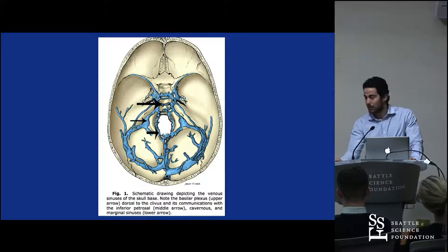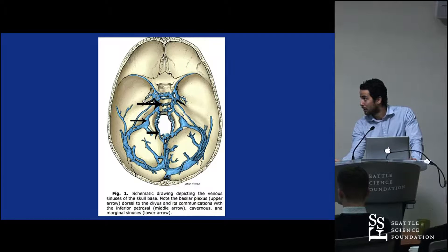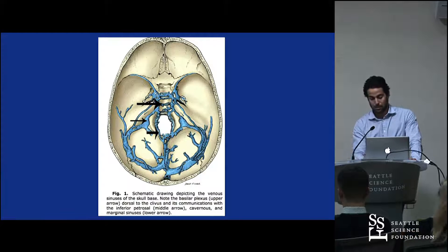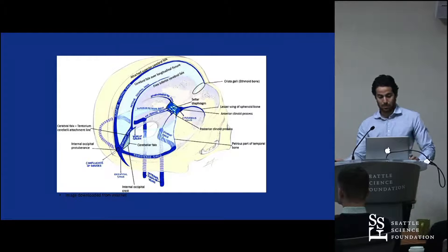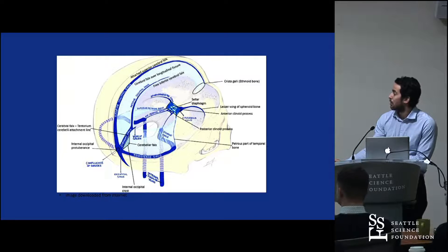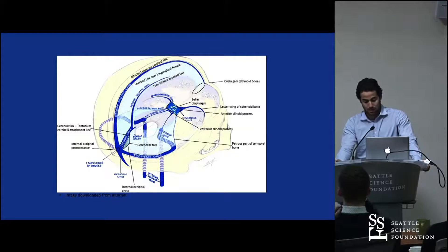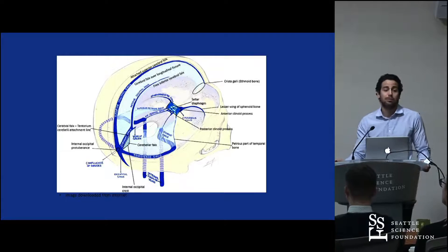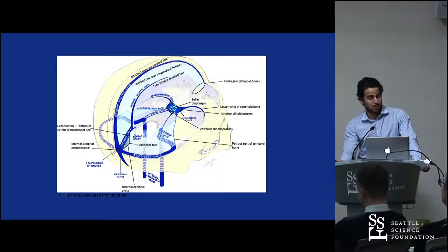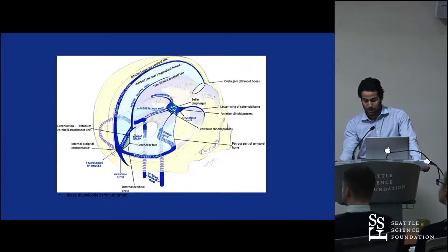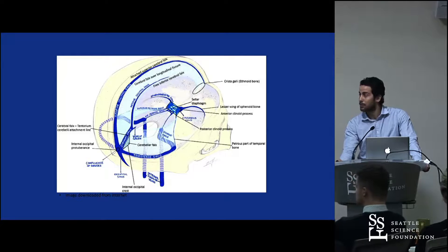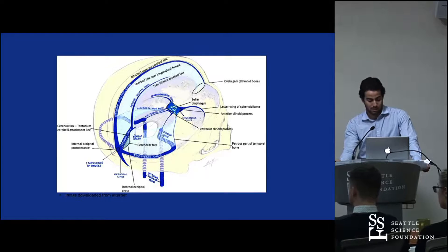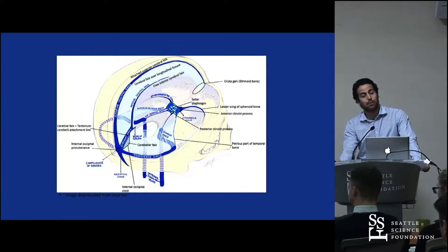Continuing, we have the sigmoid sinus, which is almost S-shaped. It runs anterior and inferior to the transverse sinus and is the continuation of it. It passes inferior to the mastoid, forming an S-shape, and drains towards the jugular foramen.